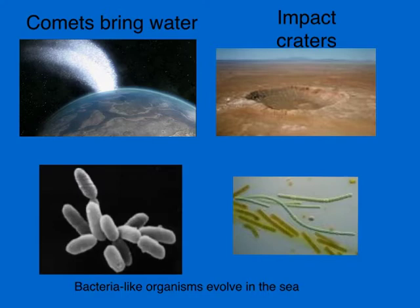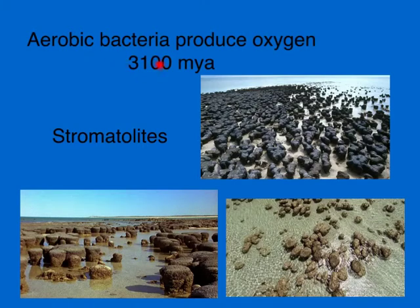Once we got water, some bacteria-like organisms evolved in the sea. The first ones that evolved were anaerobic. Then about 3,100 million years ago, aerobic bacteria evolved and began to produce oxygen. They formed themselves into very strange structures called stromatolites, and we can see remnants of them today — here are some stromatolites off the coast of Australia.